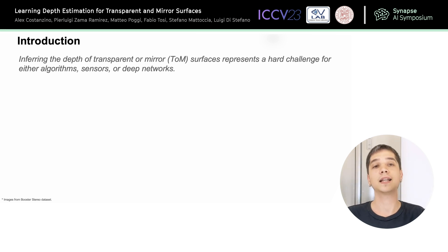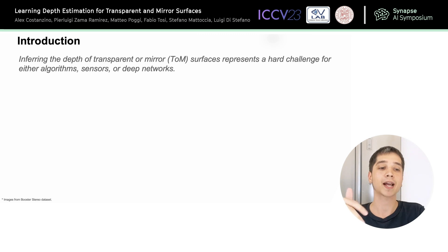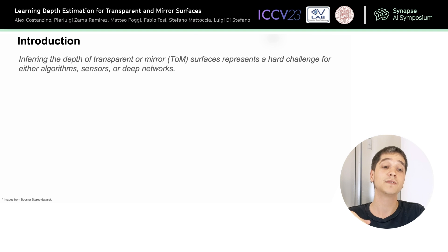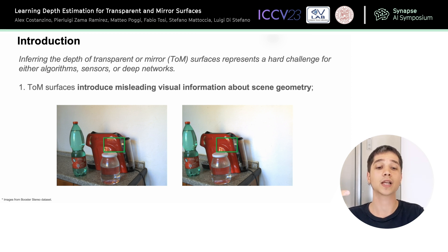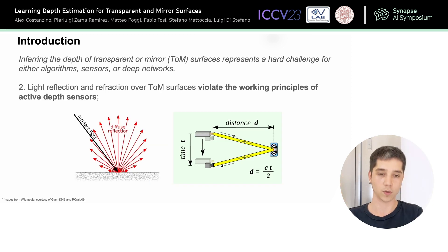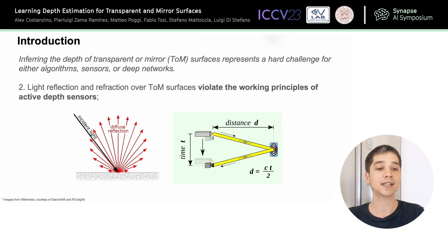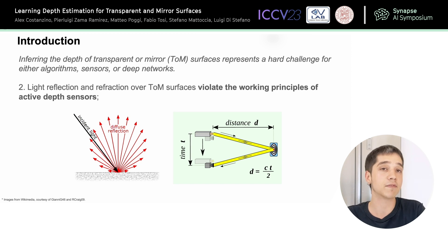Before we dive into the specifics, let's give a bit of context. In recent years, depth estimation has seen remarkable progress and outstanding results across various applications. However, these achievements often fall short when it comes to transparent and mirror surfaces. For instance, these surfaces may still introduce deceptive visual cues about scene geometry, which hinders left-handling systems that need stereo algorithms to match pixels. Moreover, the complexity of light reflection over these surfaces defeats traditional depth sensors, which can no longer refer to the correct depth.